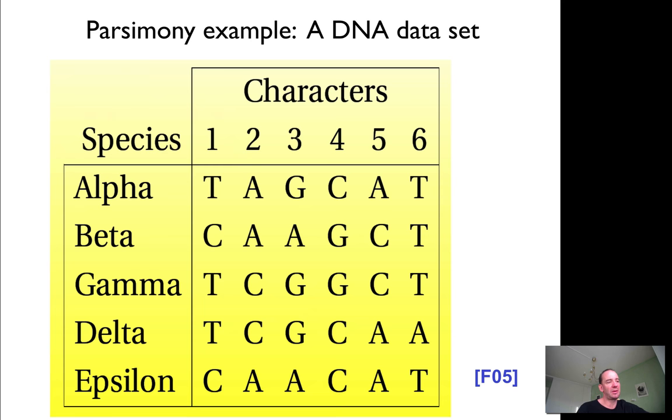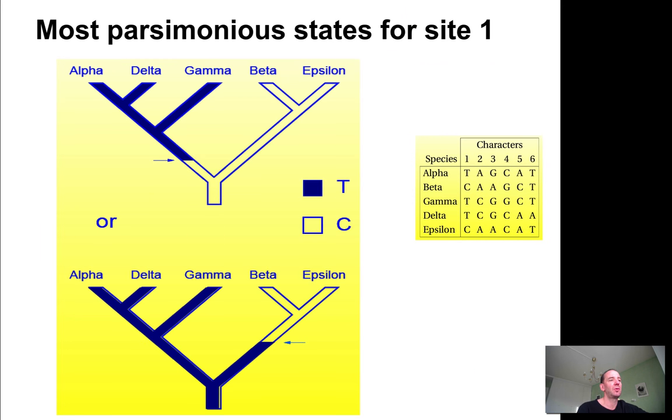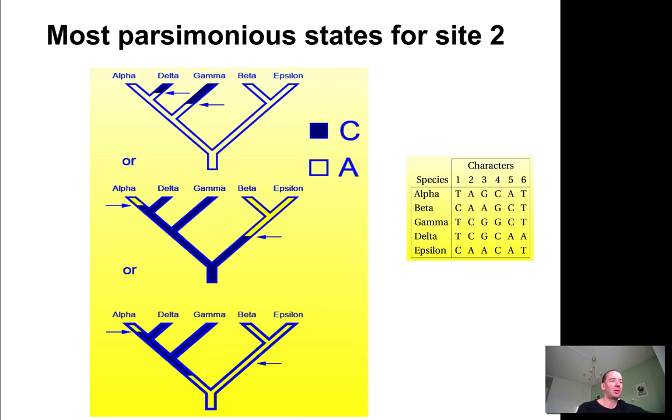In parsimony, you have species—alpha, beta, gamma, delta, epsilon—and you have characters at each position. You have a tree that you generate from neighbor joining or something else. You want to see what has happened at every step and how this data is best explained by the tree. For instance, if you take position 1, you want as few changes as possible. You can have a T to C change—either between the root and gamma, alpha, or delta. In both cases, you only have one change. For position 2, you need two changes in the delta-gamma branch, alpha branch, or beta, so these positions can have two changes.